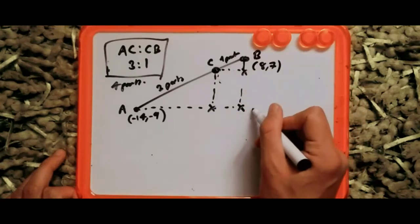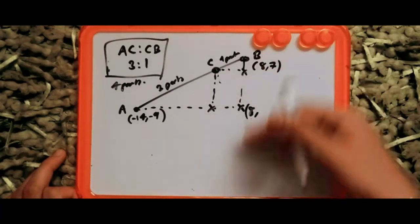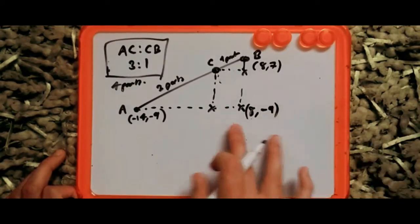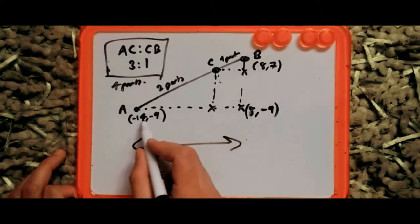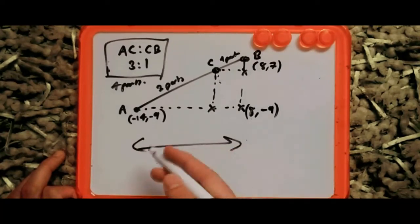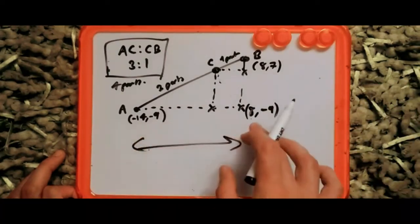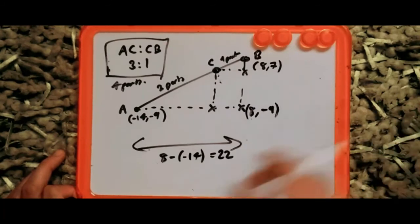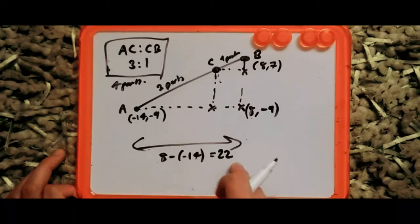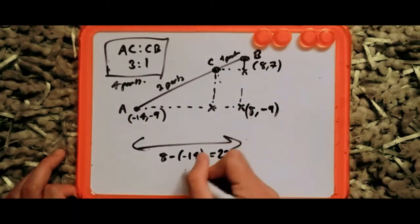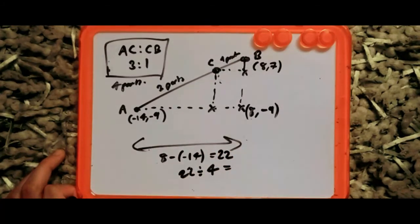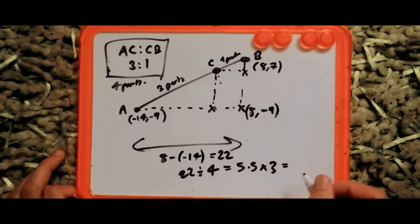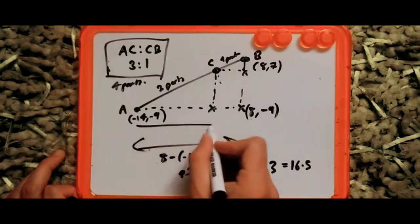For the y-axis, it's definitely on the same line as minus 9. Now we calculate the distance: from minus 14 to 8, I add the absolute value — 8 minus minus 14 gives us 22. The whole length is 22. We want three parts, so divide 22 by 4 parts, giving us 5.5, then multiply by 3: 5.5 times 3 gives us 16.5.